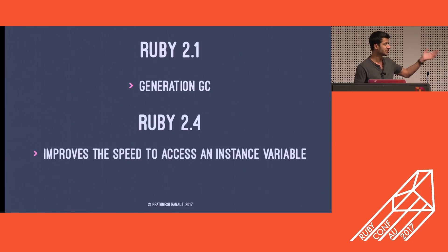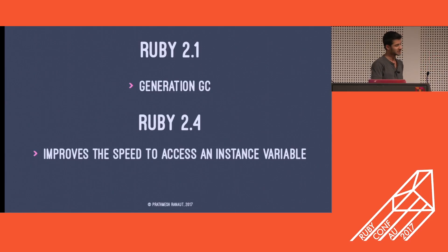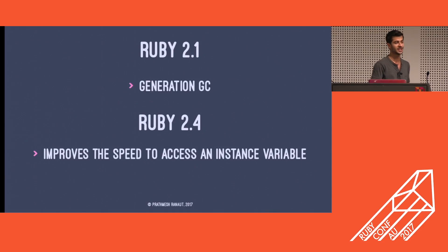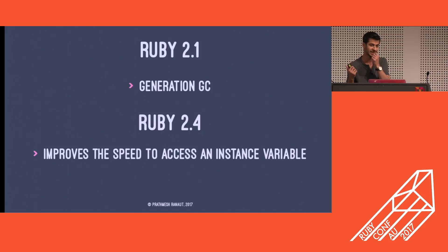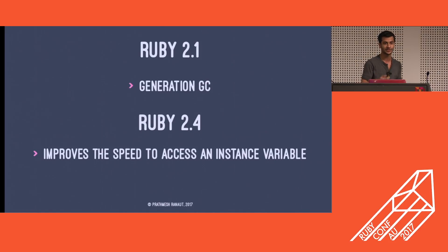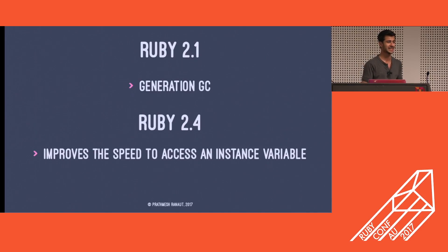Ruby 4.0 has some general speed improvements for access to instance variables. Aaron gave a talk and is working on another feature for the garbage collector which actually optimizes memory — I guess most of you have heard the talk.